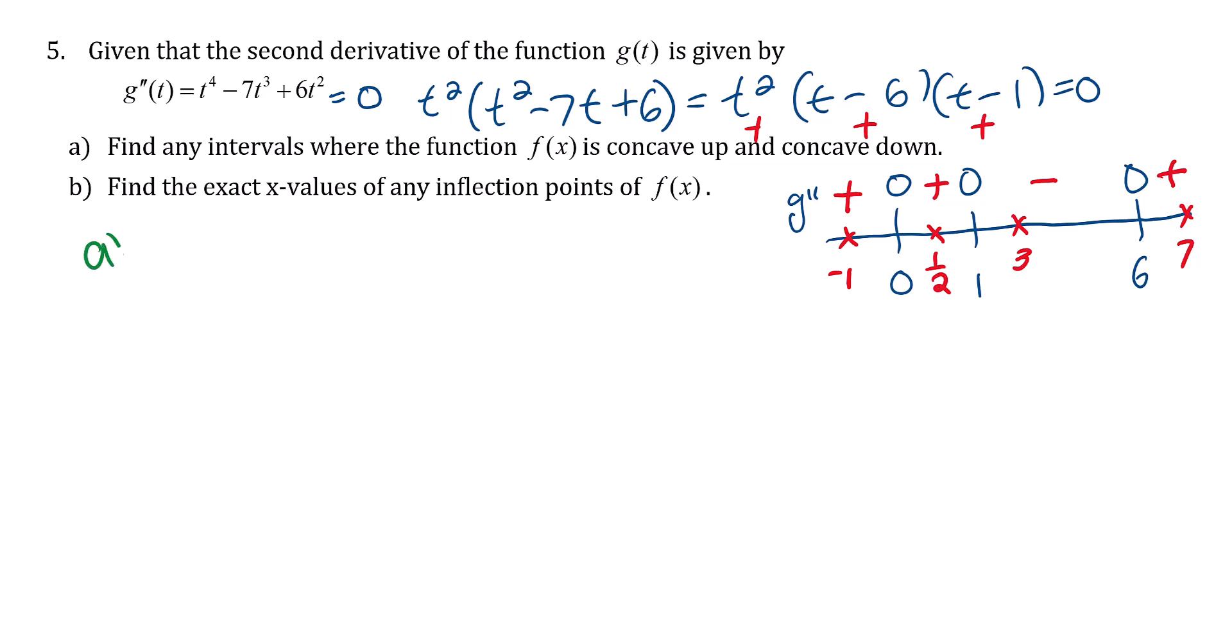Part A wants to know when it's concave up and concave down. It's concave up whenever the second derivative is positive: from negative infinity to 0, from 0 to 1, and from 6 to infinity. It's concave down when the second derivative is negative, which happens from 1 to 6.